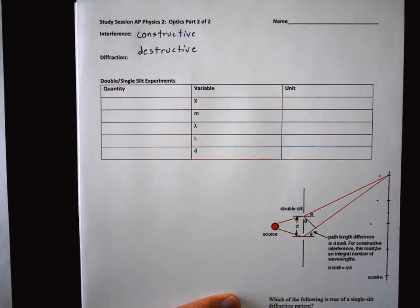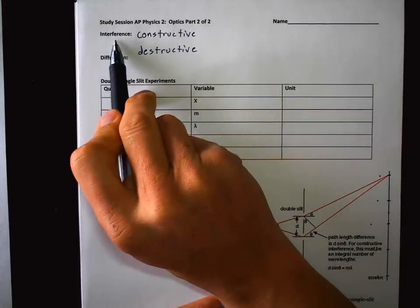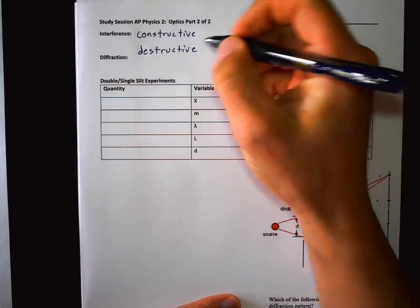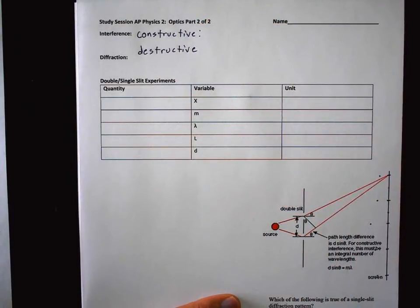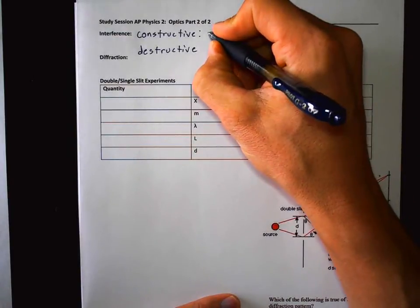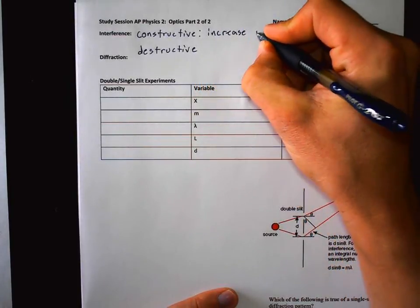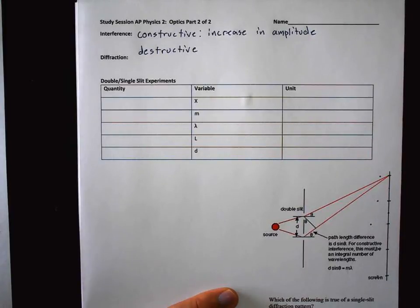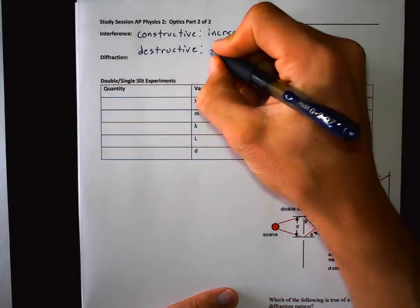You probably know these very well from physics one. Interference is when you have two waves in the same place at the same time. If their peaks and valleys line up — for example, two crests or two troughs lining up — you have constructive interference, which is an increase in amplitude. Destructive interference is when you have a canceling of two waves: a crest lining up with a trough, causing a decrease in amplitude.